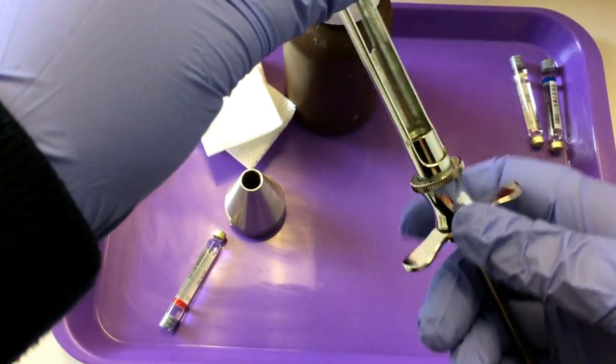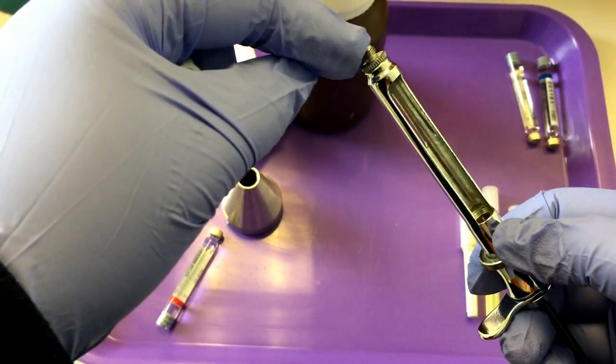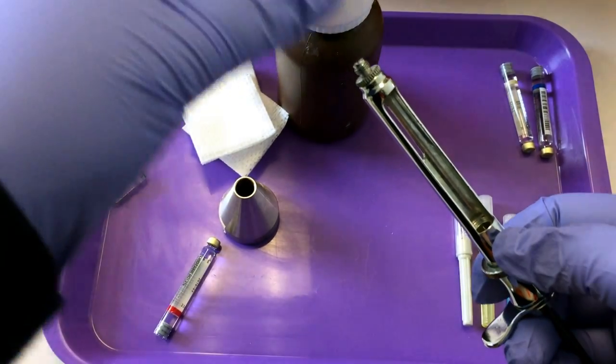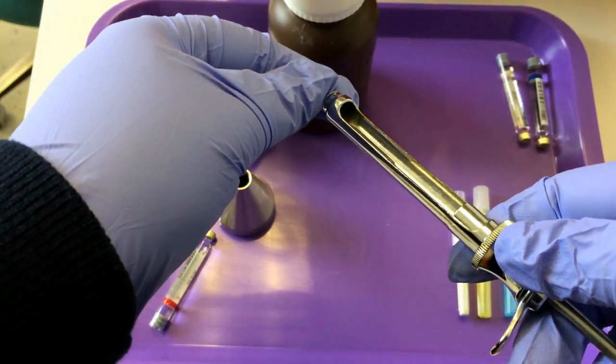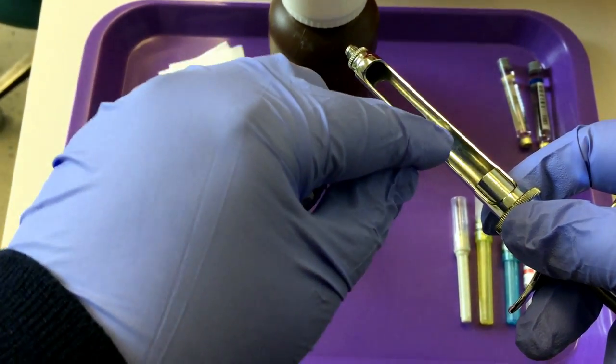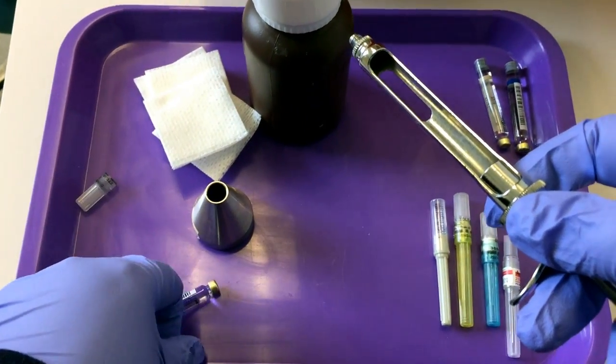Before we can insert the carpule, we want to attach the needle first. I prefer doing it this way. This is how I teach my students, because if you put the needle on first, you can make sure that the stylus is straight and not bent. If you have a bent stylus, it won't be able to puncture the carpule.